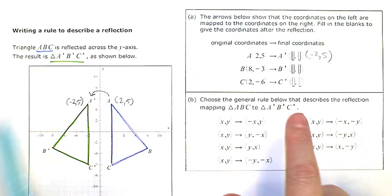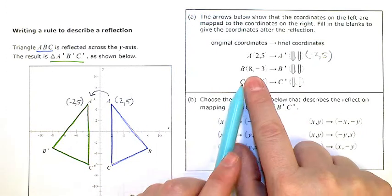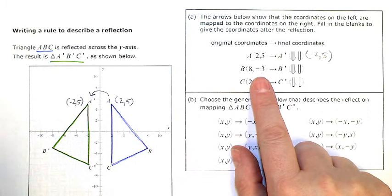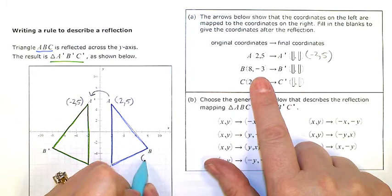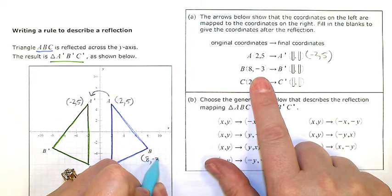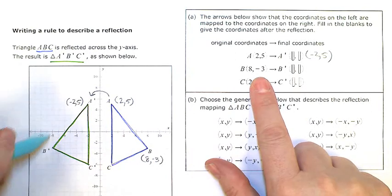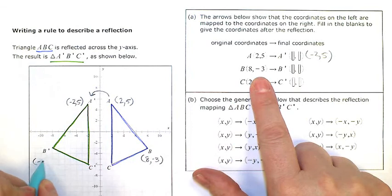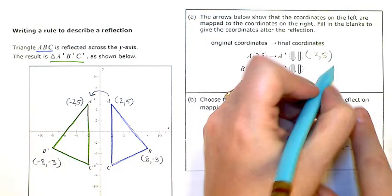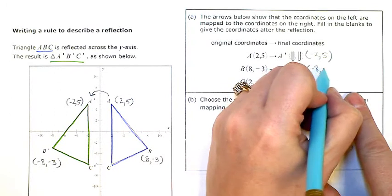Point B starts at 8, negative 3, so 8, negative 3 right here. And after the reflection, I'm at B', so that's negative 8, negative 3. So over here I would put negative 8, negative 3.